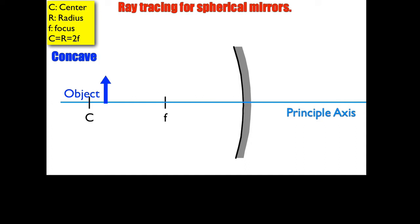I'm going to place an object, shown on the screen as an arrow, pointed somewhere between the center and the focus. Notice that the object touches the principal axis and points upwards. So when I draw my image, I also know my image is going to touch the principal axis as well, because at the principal axis, the only reflection is straight back on itself.